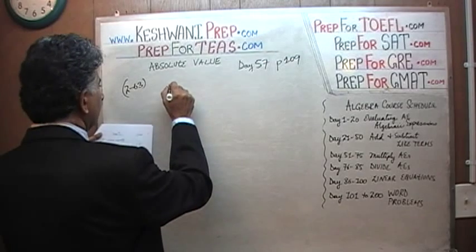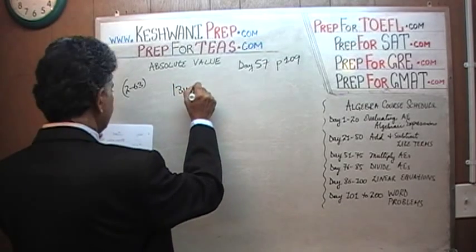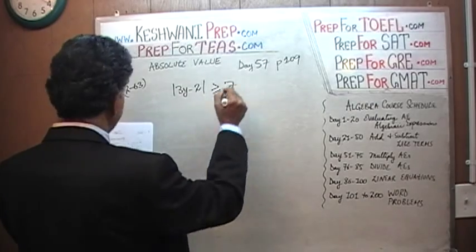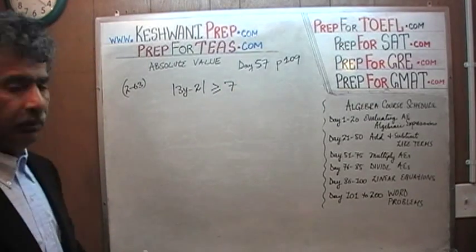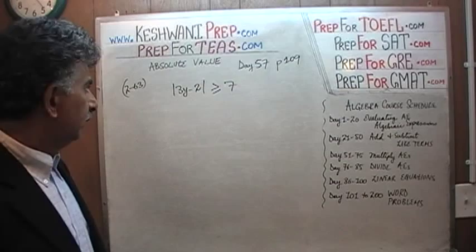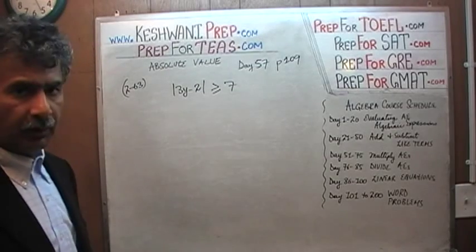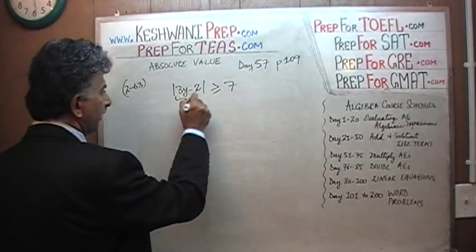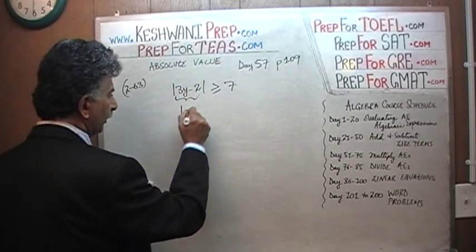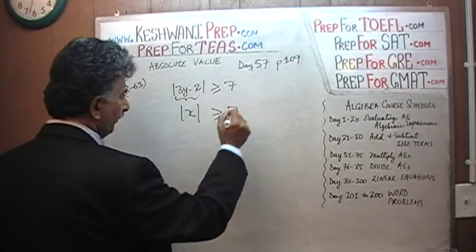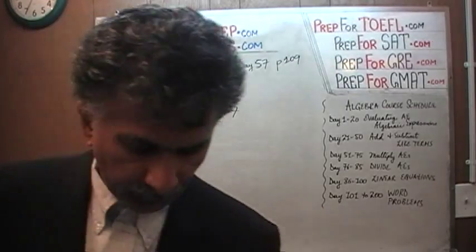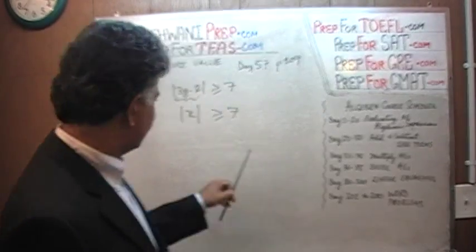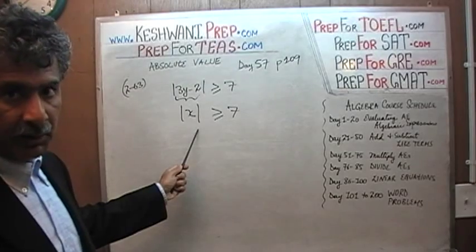The problem says: the absolute value of 3y minus 2 is greater than or equal to 7. Before we solve this, I want you to pretend that the quantity 3y minus 2 equals x. We'll substitute that back later, but let's solve it in this simpler form first because it's easier to analyze.